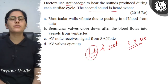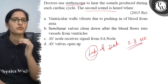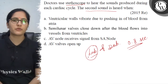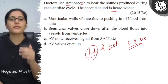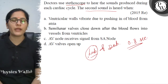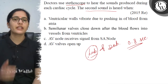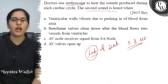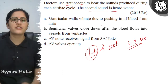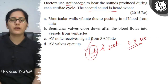When the first sound 'lubb' is produced, the atrium and ventricle valves are involved. The right atrium and right ventricle have tricuspid valves, and the left atrium and left ventricle have bicuspid valves, also known as the mitral valve. When these valves are closed, the first heart sound 'lubb' is produced.